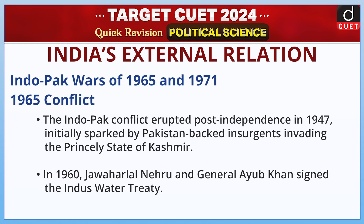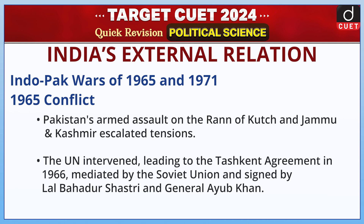Indo-Pakistan Wars of 1965 and 1971 — 1965 Conflict: The Indo-Pakistan conflict erupted post-independence in 1947, initially sparked by Pakistan-backed insurgents invading the princely state of Kashmir. In 1960, Jawaharlal Nehru and General Ayub Khan signed the Indus Water Treaty. Pakistan's armed assault on the Rann of Kutch and Jammu and Kashmir escalated tensions. The UN intervened, leading to the Tashkent Agreement in 1966, mediated by the Soviet Union and signed by Lal Bahadur Shastri and General Ayub Khan.